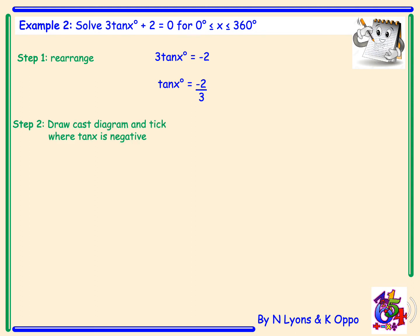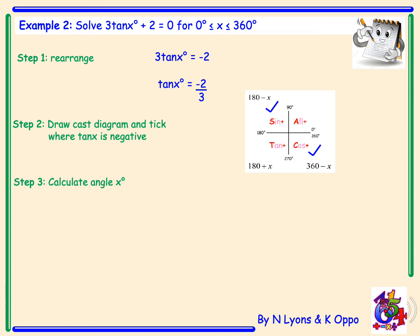We draw a CAST diagram and tick where tan is negative. The tan graph is negative in the second quadrant, between 90 and 180, and also negative in the fourth quadrant, between 270 and 360. To find the angle in each quadrant, we do inverse tan of 2 over 3, which gives us 33.7 degrees.